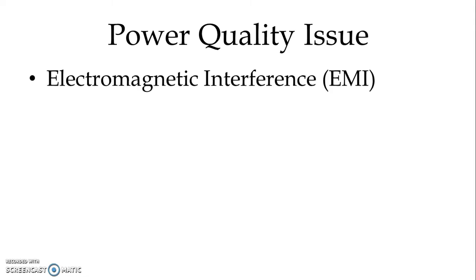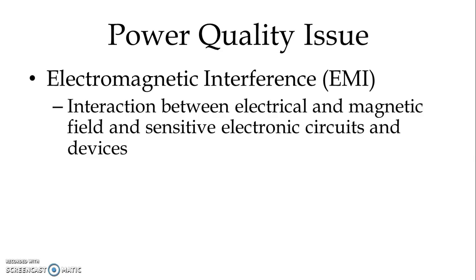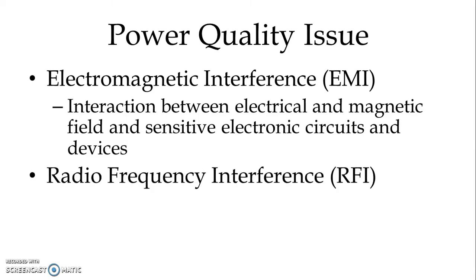Electromagnetic interference (EMI) refers to the interaction between electrical and magnetic fields and sensitive electronic circuits and devices. We also have radio frequency interference (RFI), which is normally a very distinct phenomenon compared to electromagnetic interference.